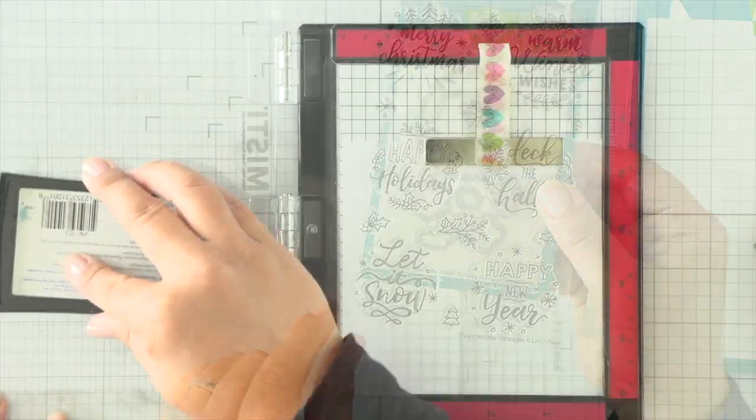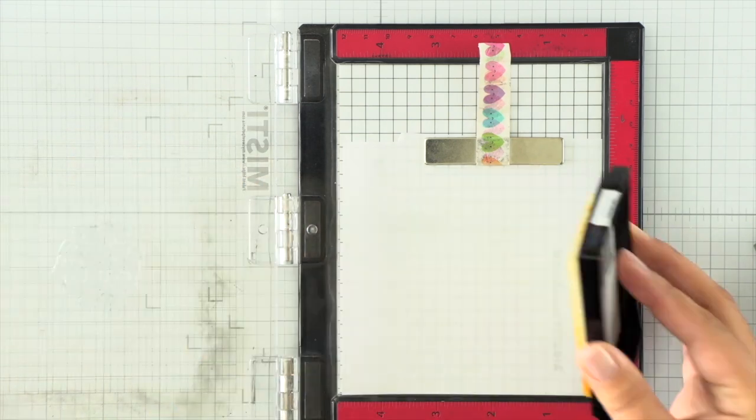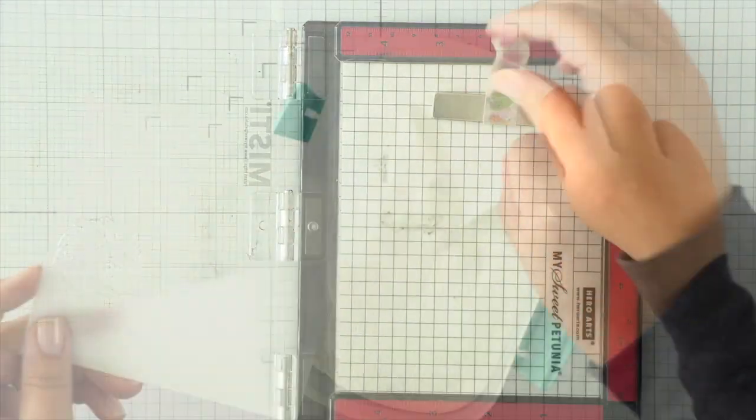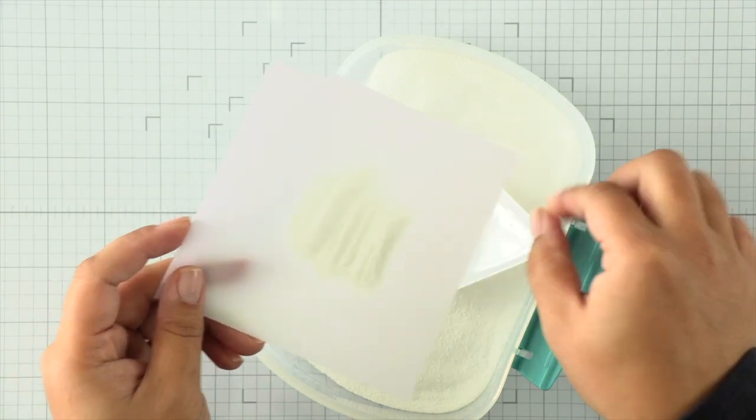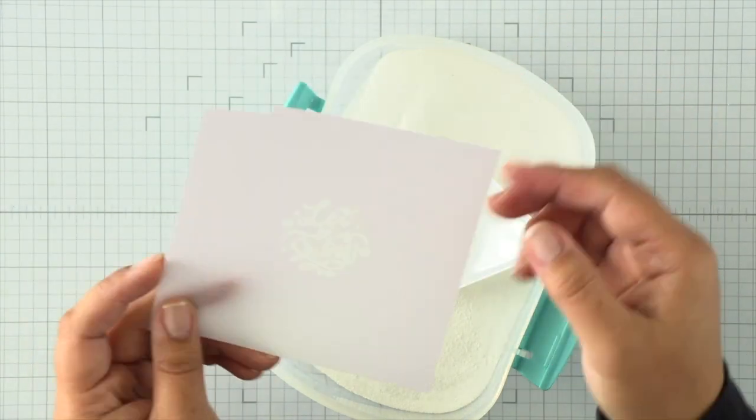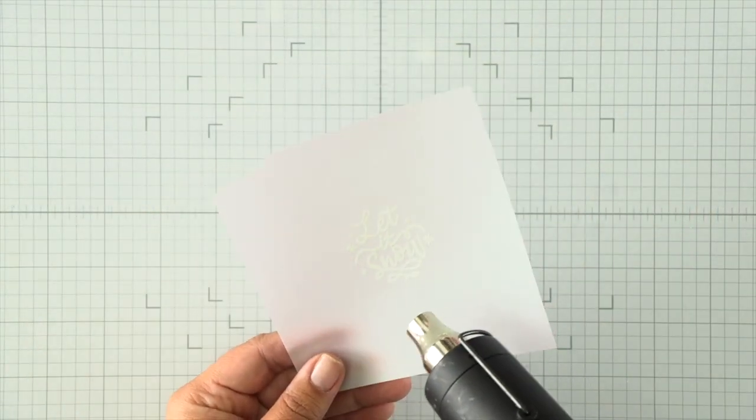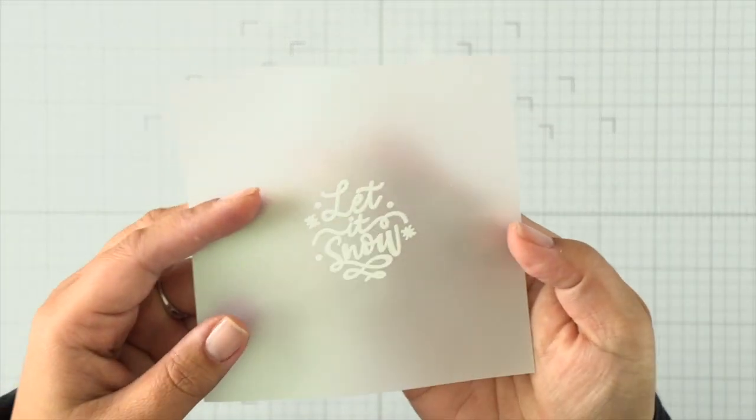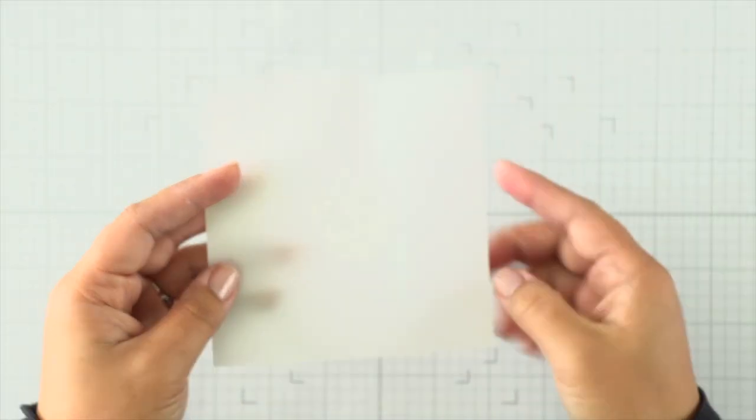I'm going to stamp my sentiment and emboss it in white over that pearlescent vellum. I'm using the Magic Holiday Messages and stamping 'let it snow' into the center. I'll add some white embossing powder, heat set that, and set it aside.